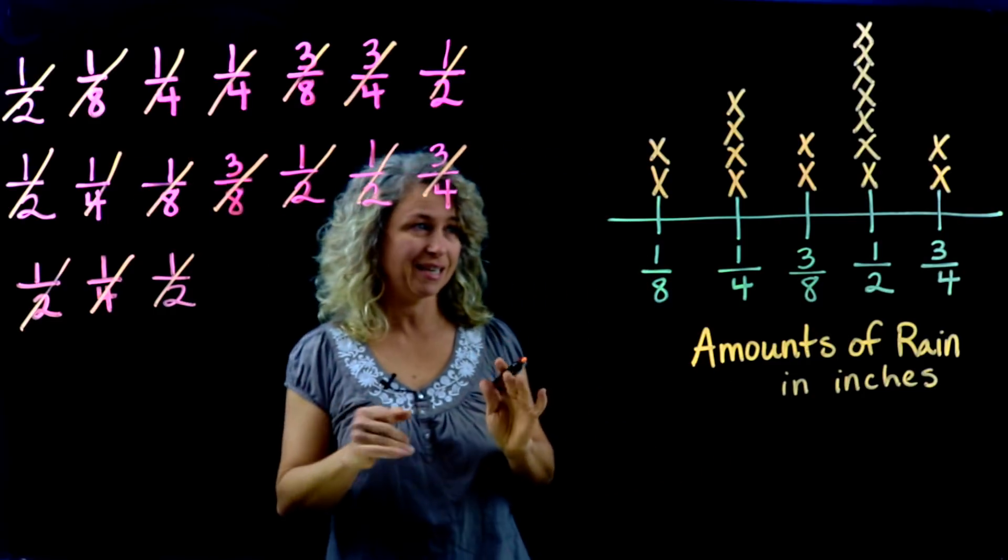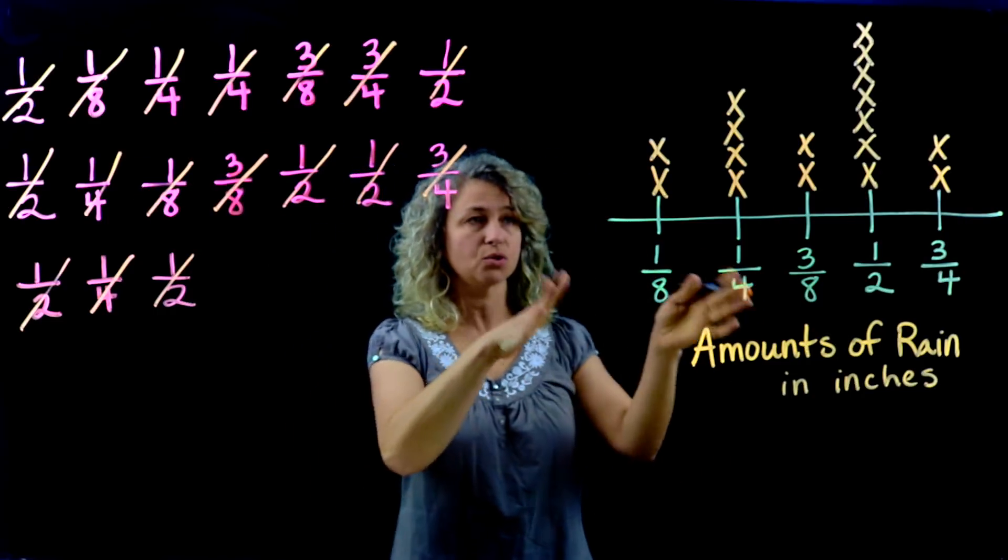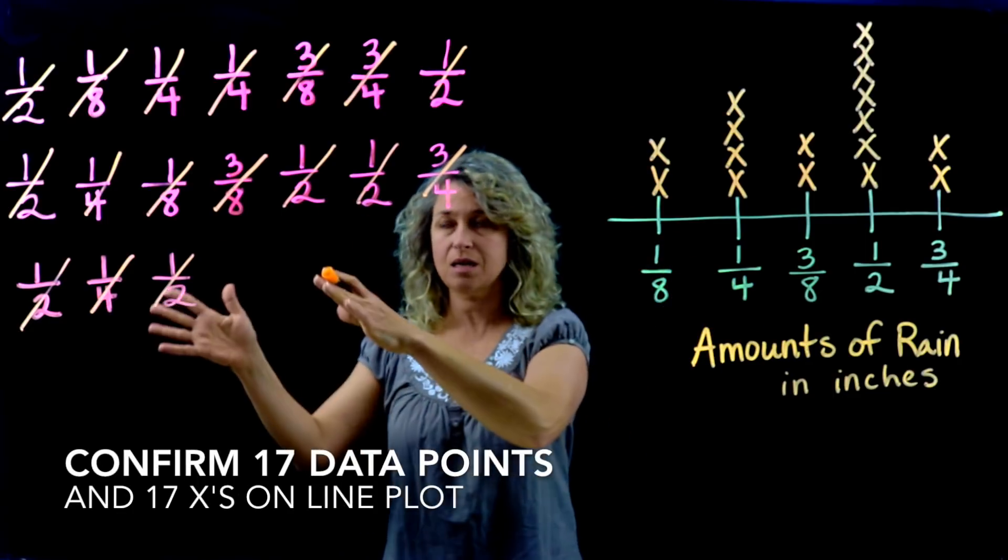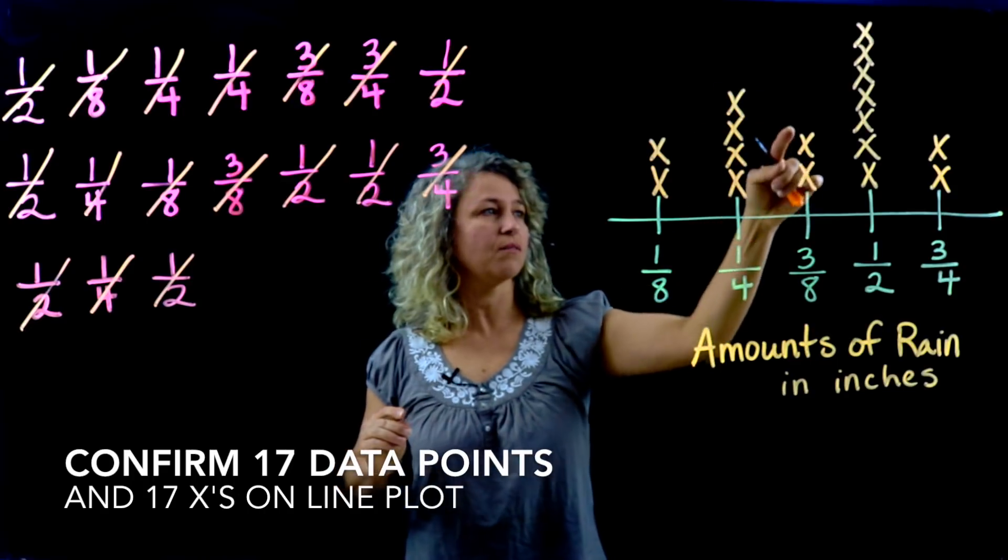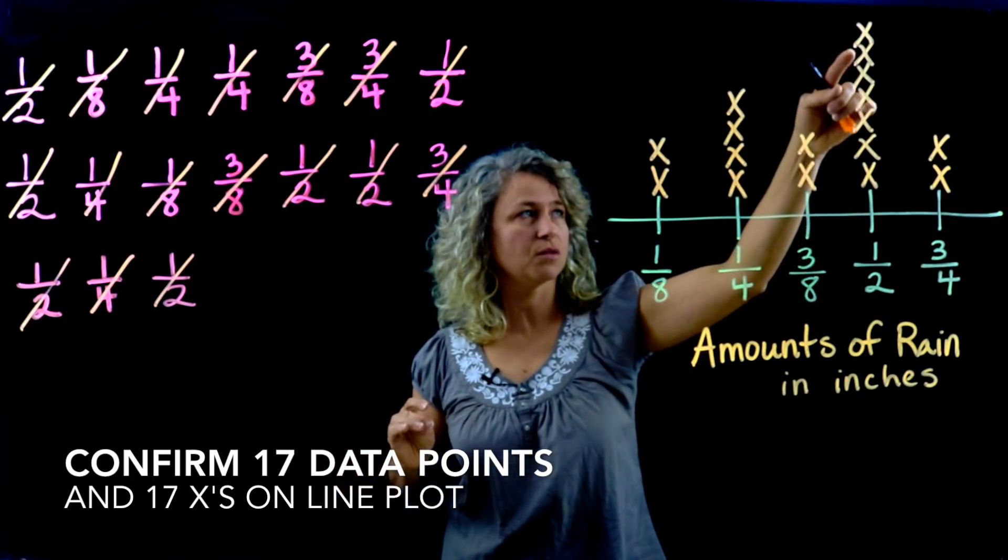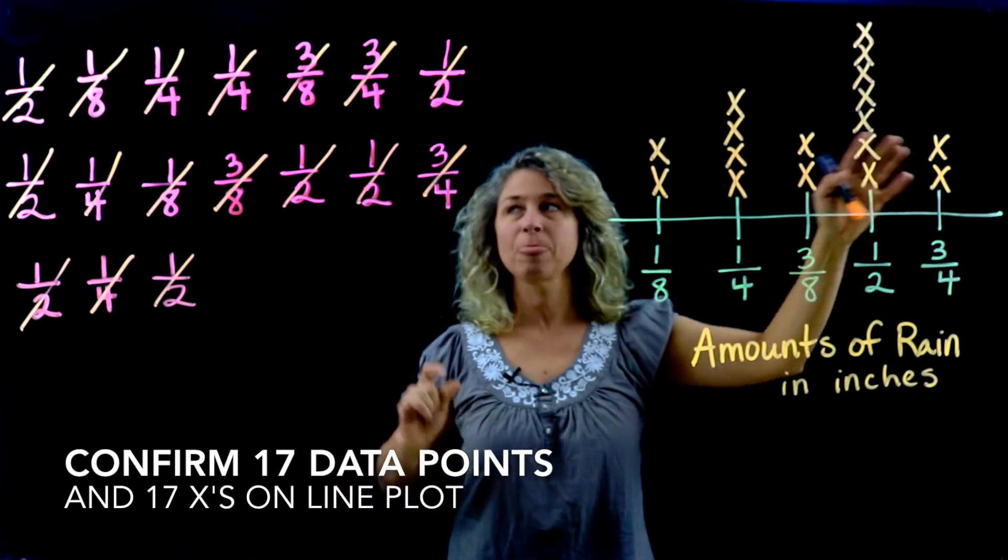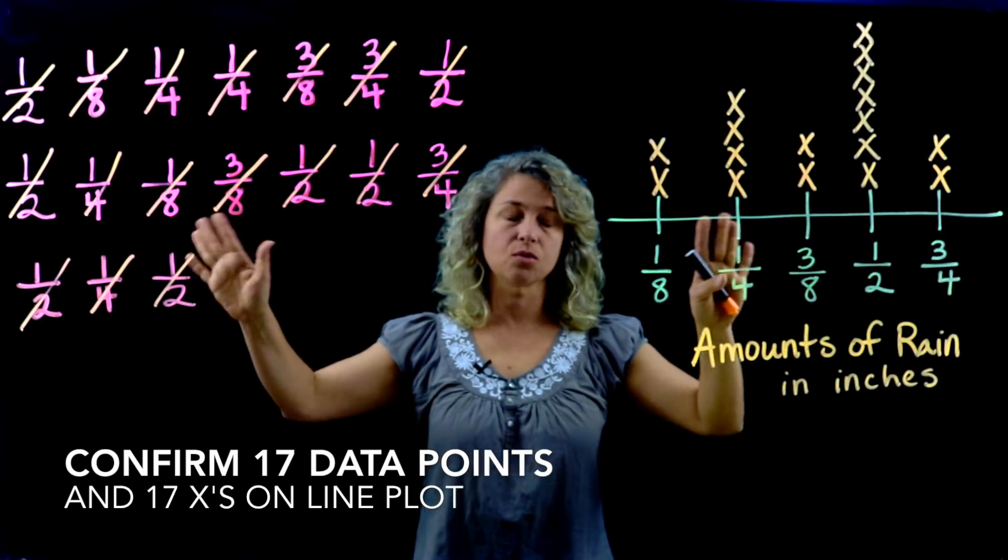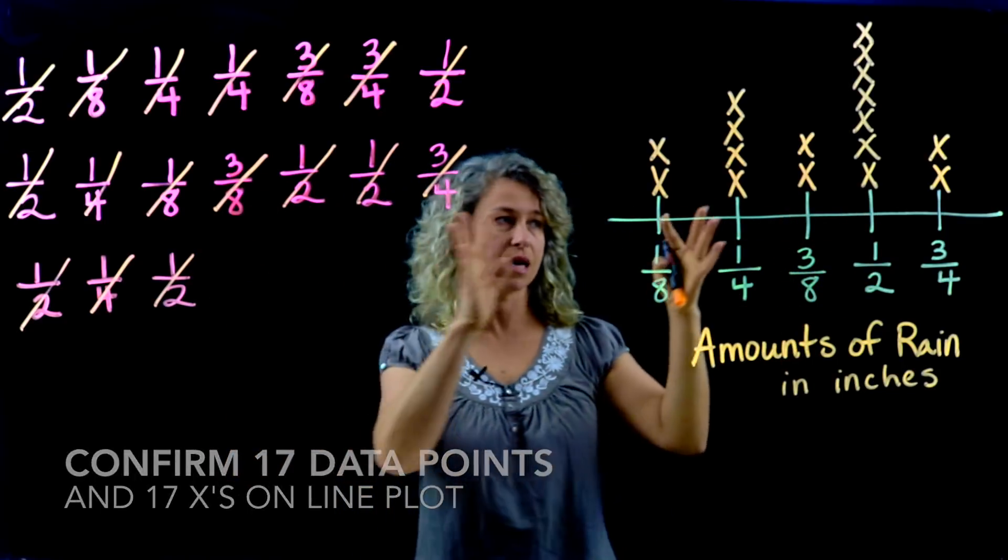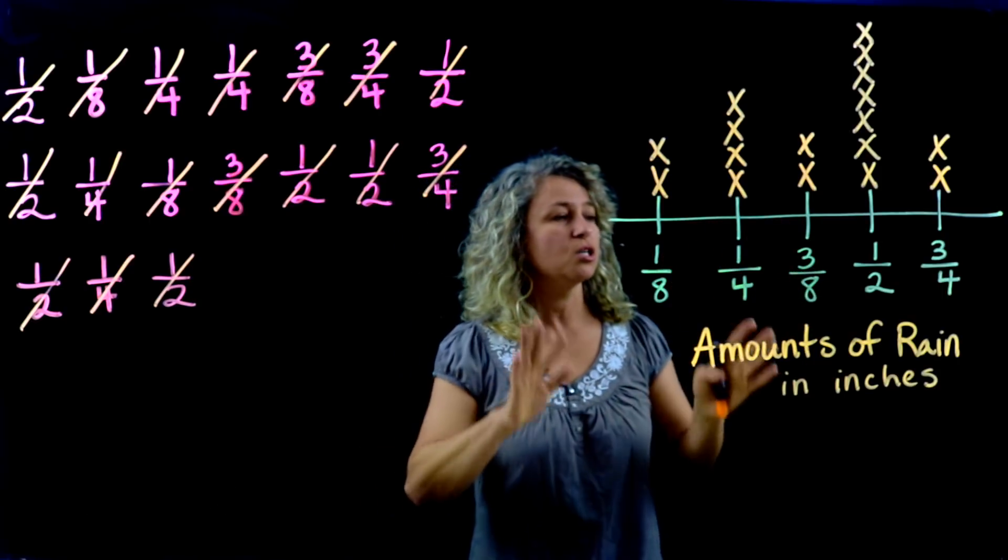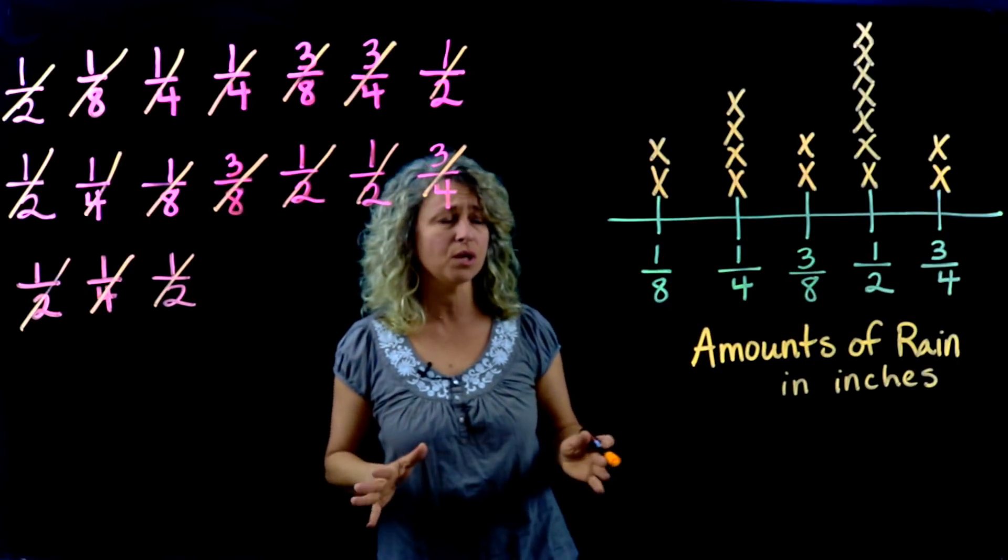It's not a bad idea at this point to count and make sure that you have the same amount of X's as you have data points: 1, 2, 3, 4, 5, 6, 7, 8, 9, 10, 11, 12, 13, 14, 15, 16, 17. This is a real common error that a student can make—not getting the correct amount of data points and X's.